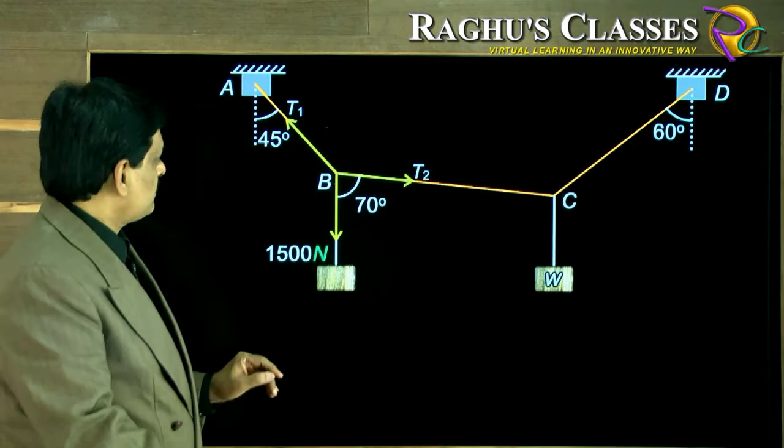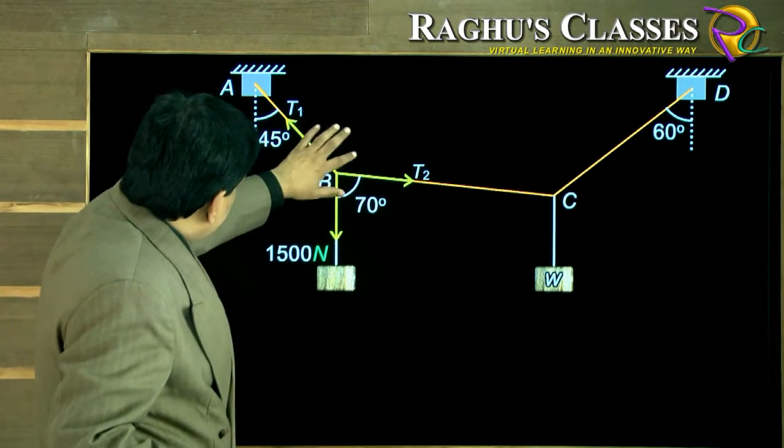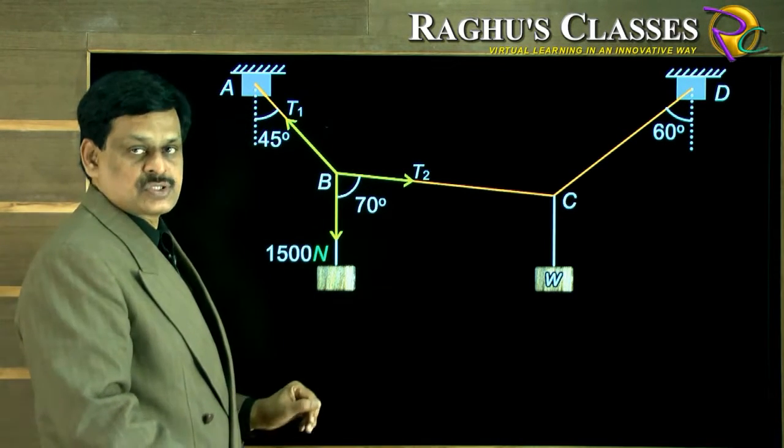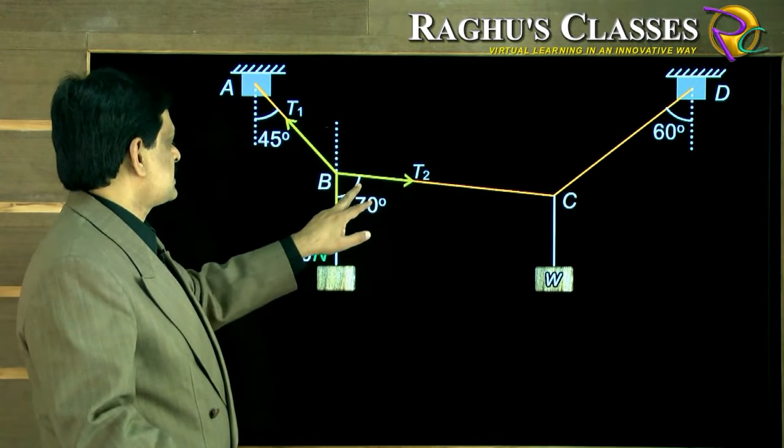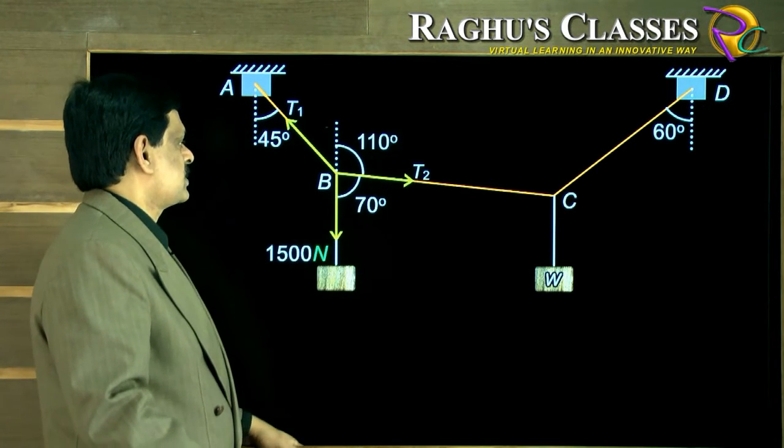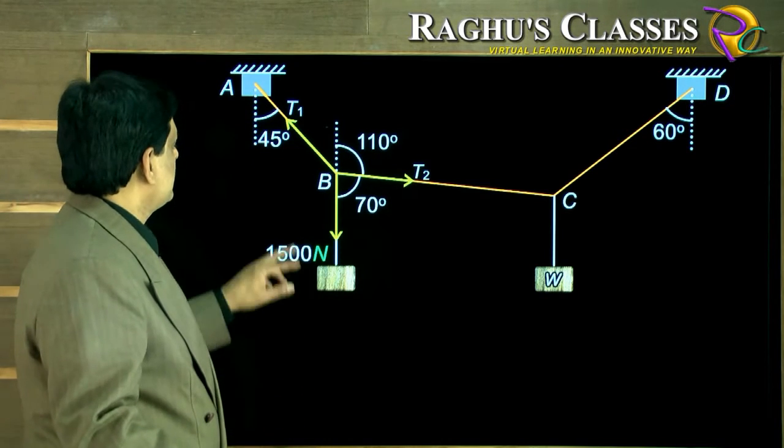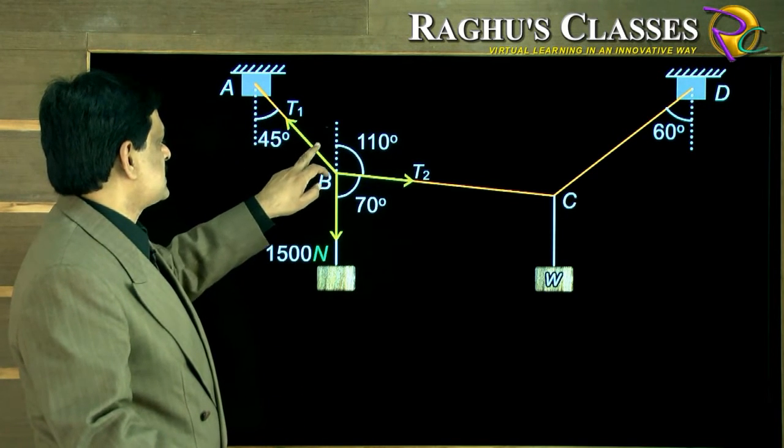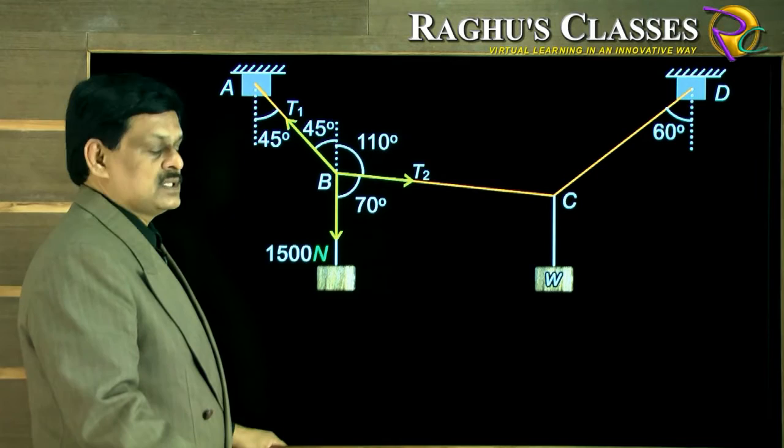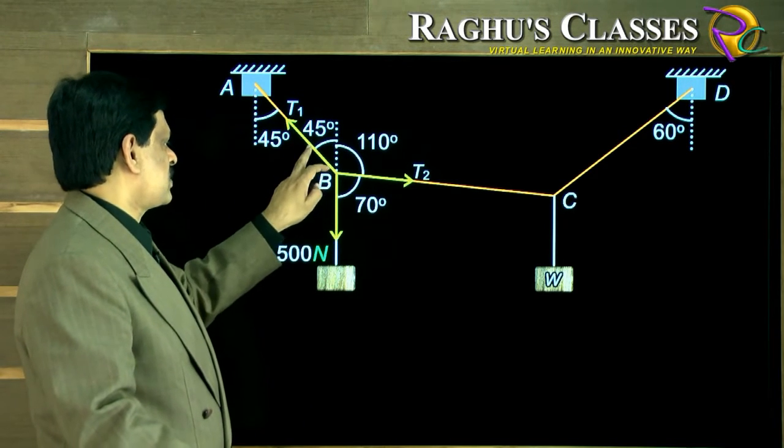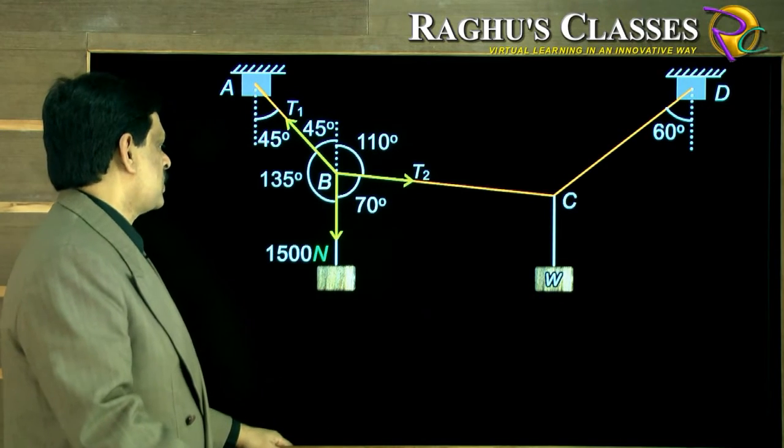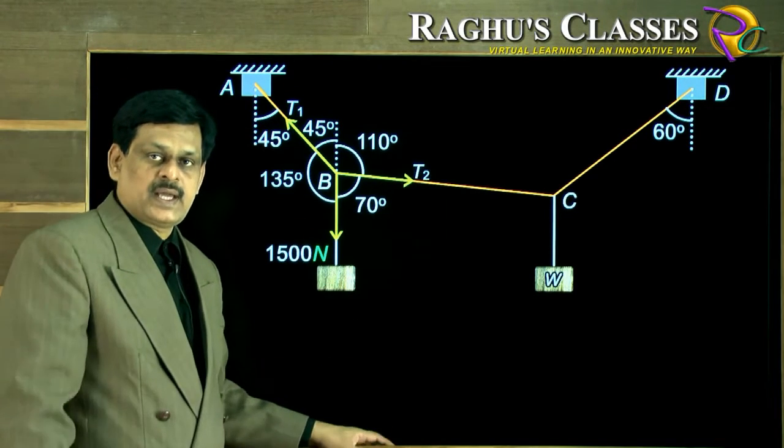So these are the three forces here, and now let us think about the angles here between the forces. If I extend this line up, we know this is 70 degrees, so the remaining is equal to 110 degrees. This is 45 here, so we understand this is also 45, and since this is 45, total is 180, so 180 minus 45, the remaining angle is going to be 135. So we know all the angles here.